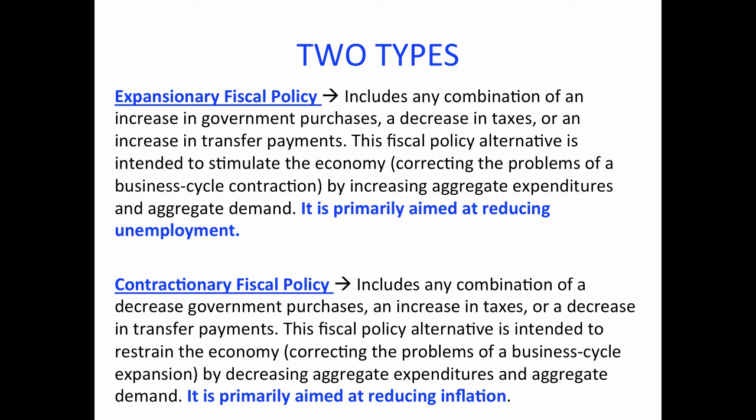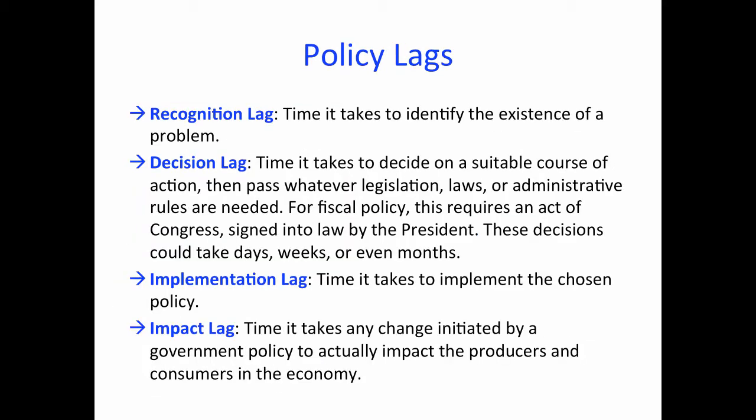Fiscal policy intended to stimulate the economy — correcting the problems of a business cycle contraction — is called expansionary policy, and includes any combination of an increase in government purchases, a decrease in taxes, or an increase in transfer payments. Fiscal policy intended to restrain the economy — correcting the problems of a business cycle expansion — is called contractionary policy, and includes any combination of a decrease in government purchases, an increase in taxes, or a decrease in transfer payments.